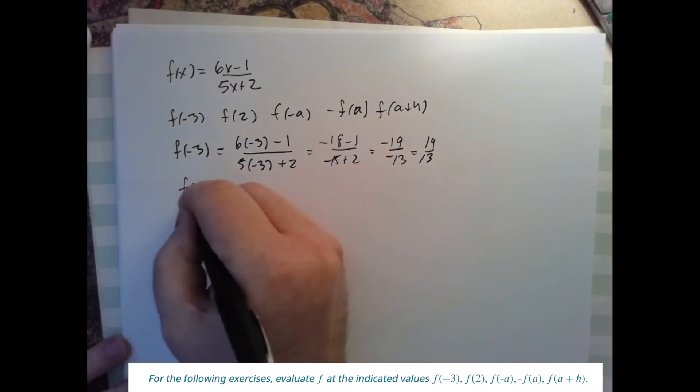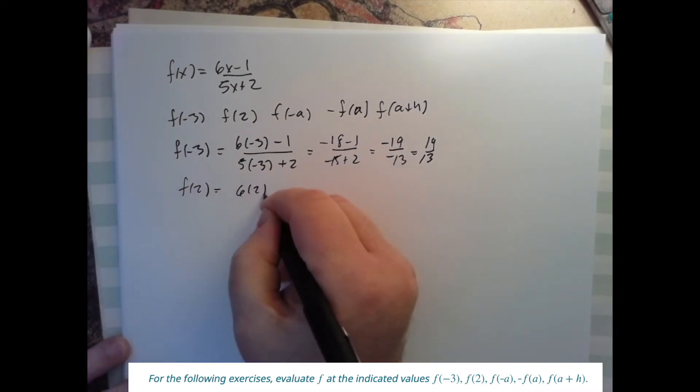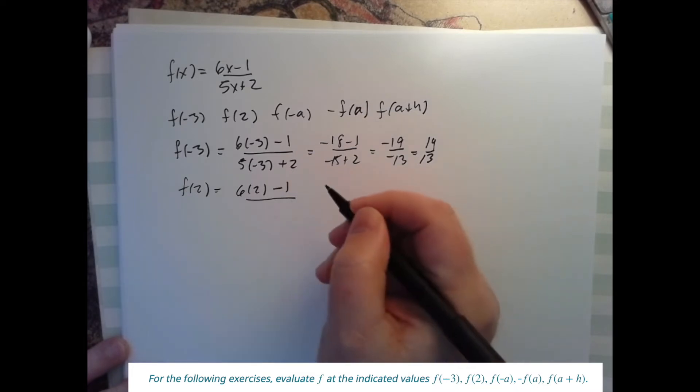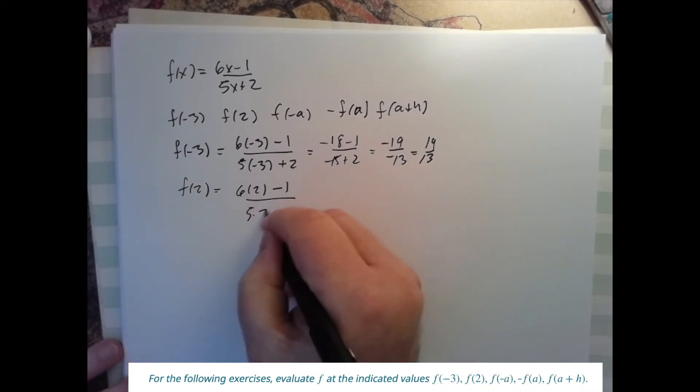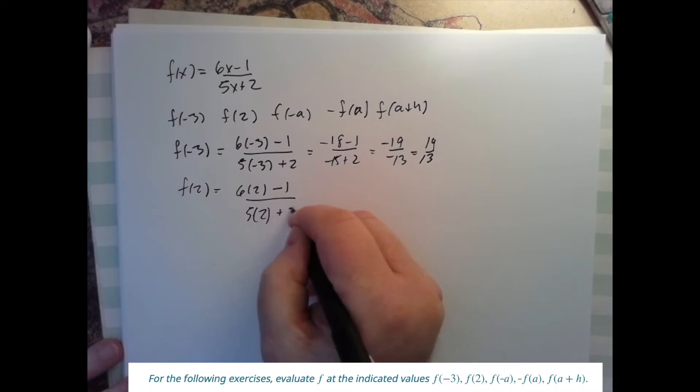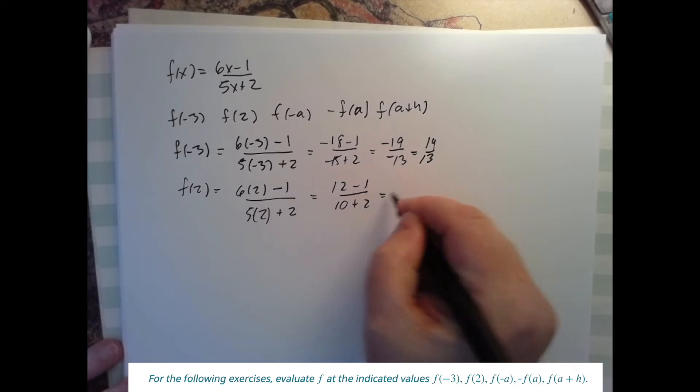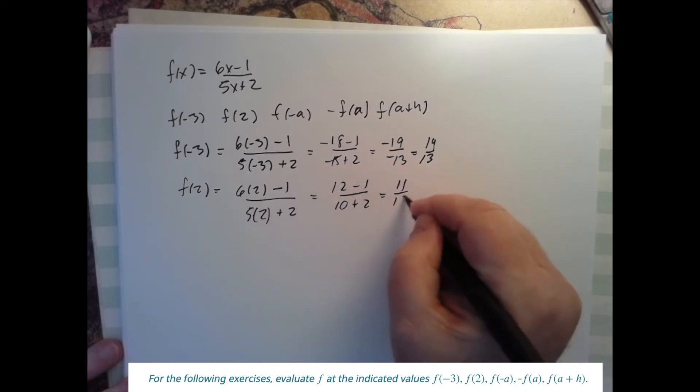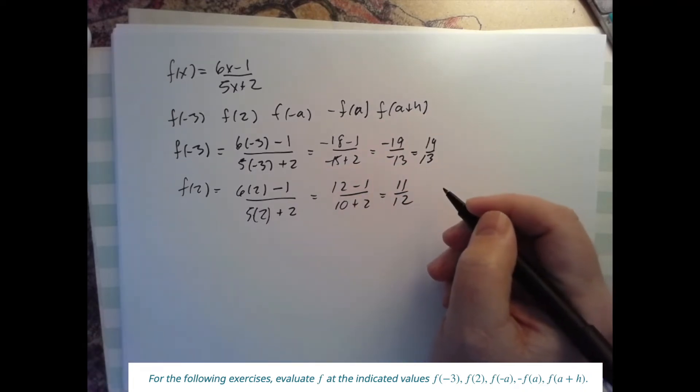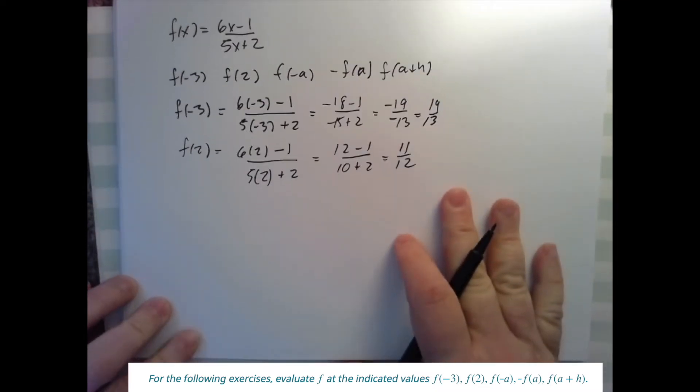Now f of two, that would be minus one, six times two minus one, five times two plus two. So I get 12 minus one over 10 plus two, which is 11 over 12.